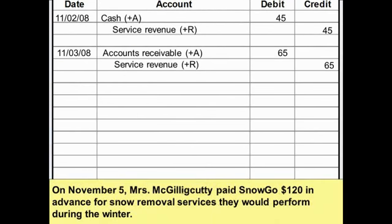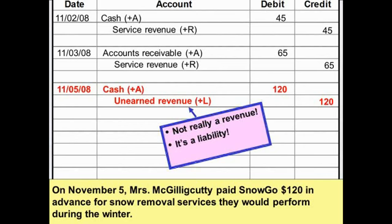On November 5th, Mrs. McGillicuddy paid SnowGo $120 in advance for snow removal services to be performed during the winter. SnowGo will record an increase in cash of $120 by debiting the cash account. But do they have a revenue? No — they haven't yet done the work, and until they've completed the job and earned the revenue, they won't have one. What they do have is an obligation to do the work, which is a liability. When someone pays you to do a job you haven't done yet, you have an unearned revenue. We increase liabilities with a credit. But remember — just because this account has the word 'revenue' in it, it is not a revenue. When it has 'unearned' in front of it, it's a liability.